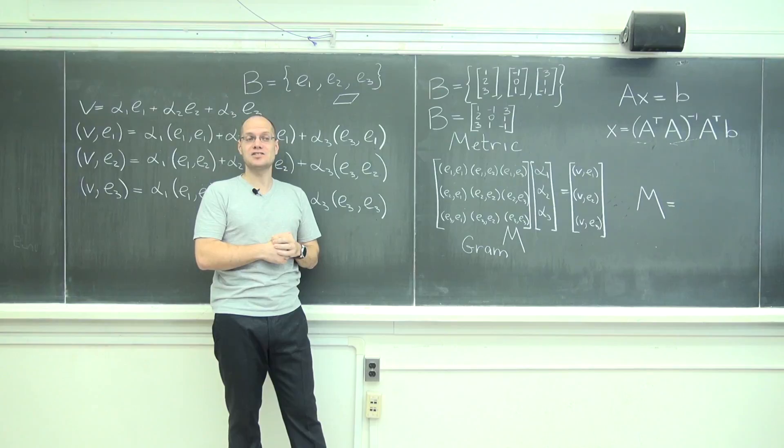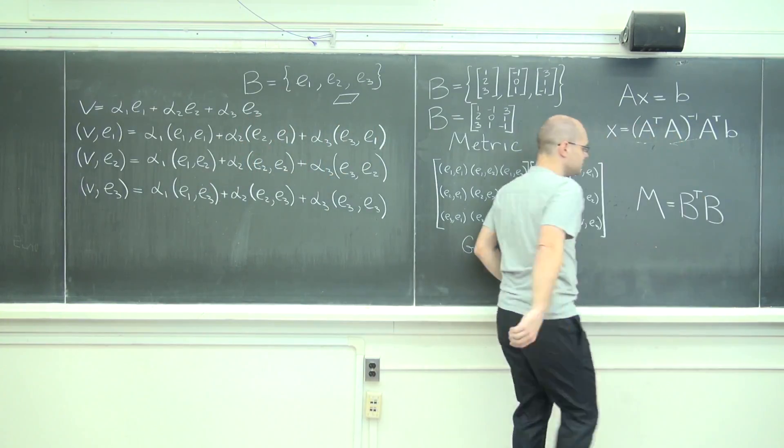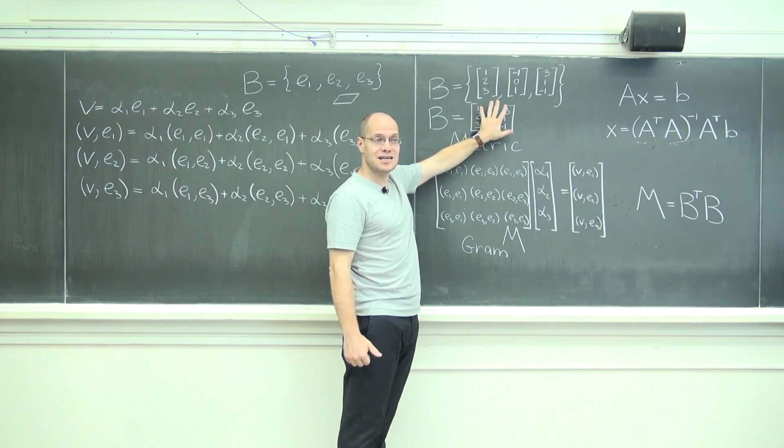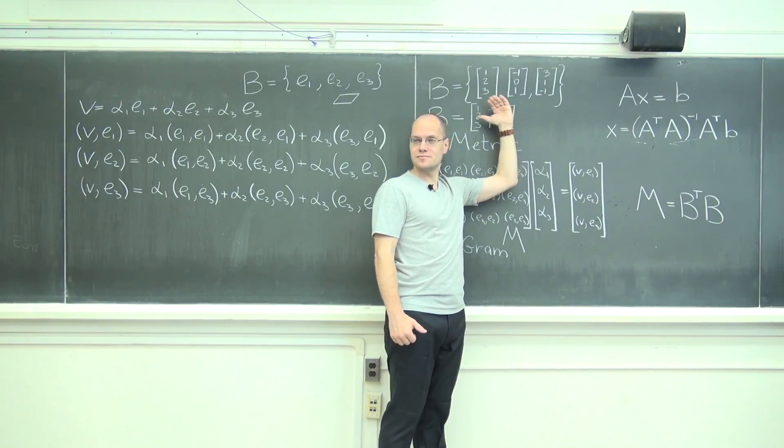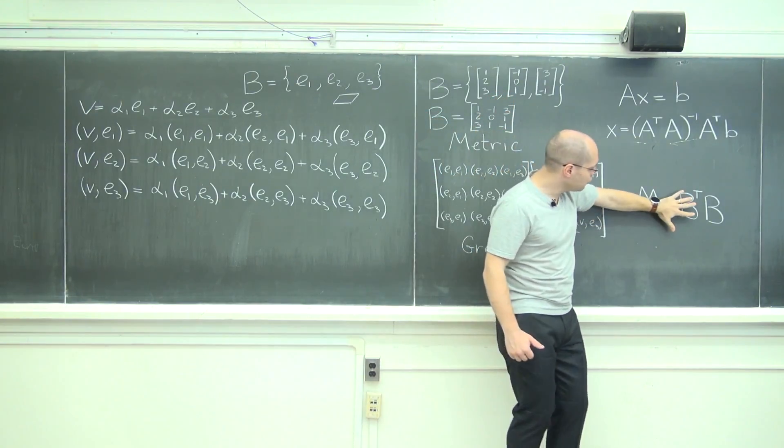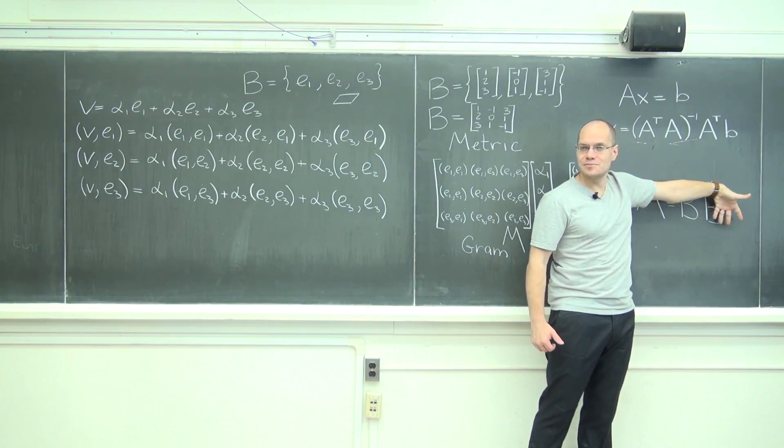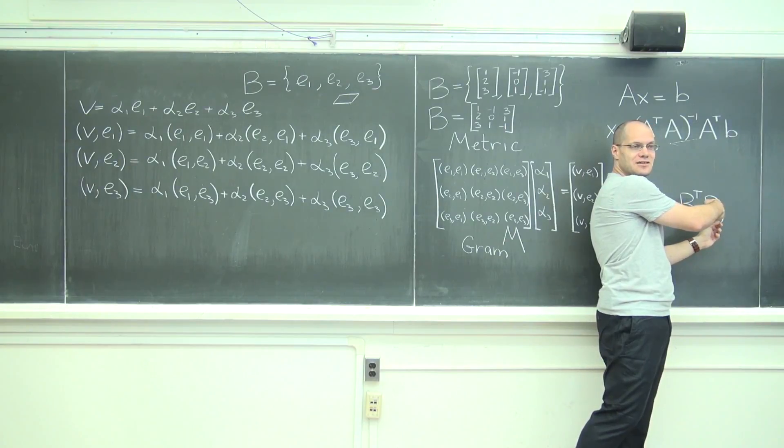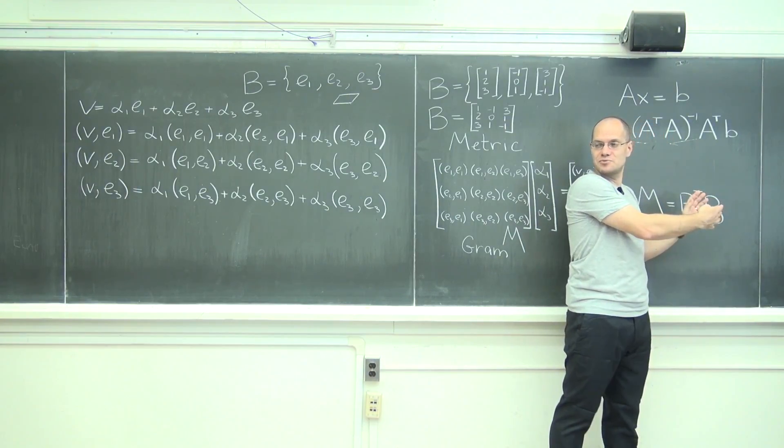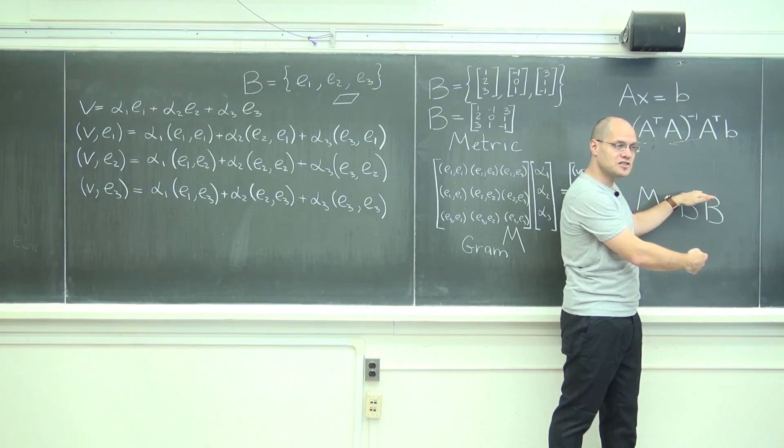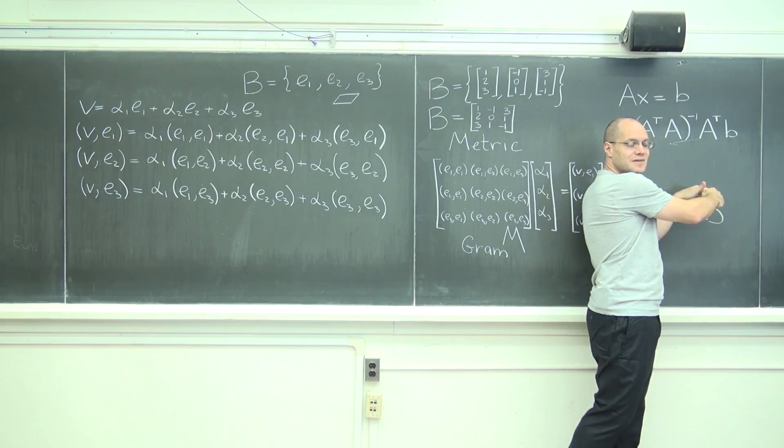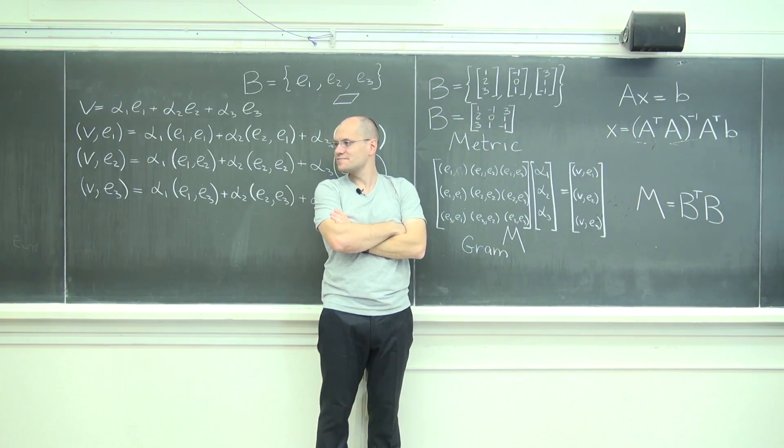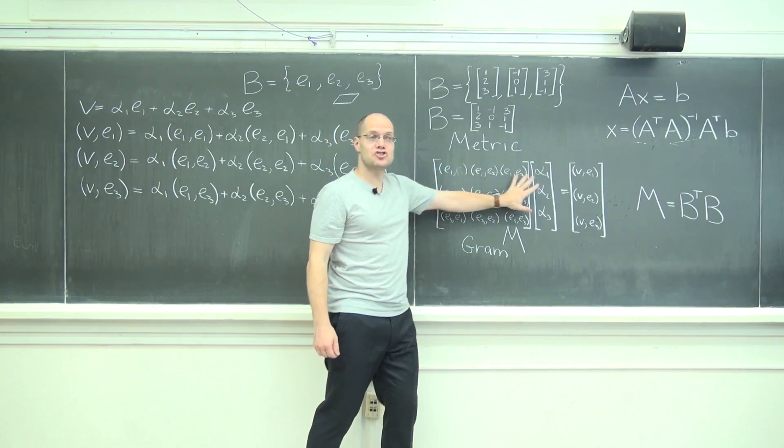B transpose B. Can you guys see why that is? B transpose takes these columns and makes them rows, so in this product we have rows of B here and columns of B here. So if you think through the mechanics of matrix multiplication, every entry—remember—is the dot product, as we used to call it, of the corresponding row with the corresponding column. And that's exactly the standard inner product of these basis vectors.